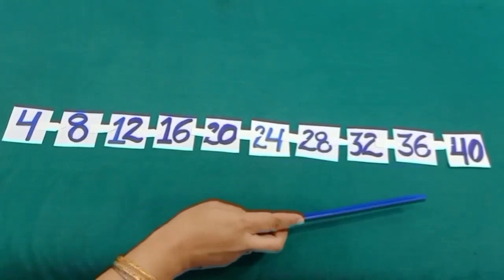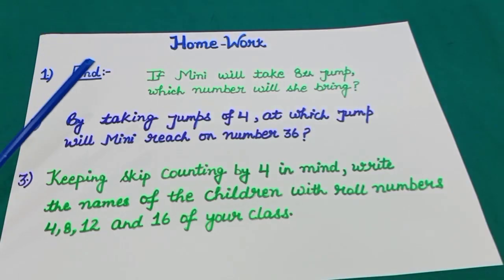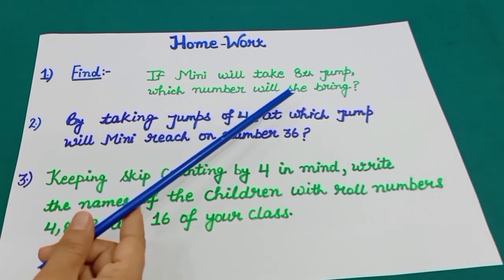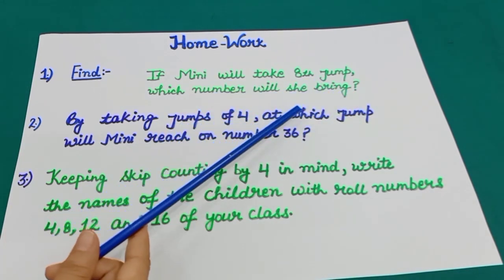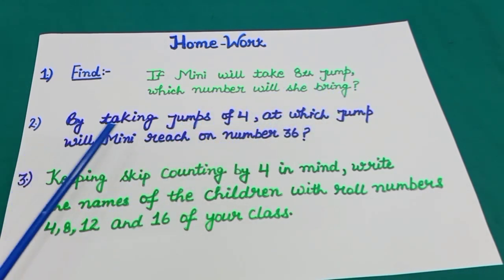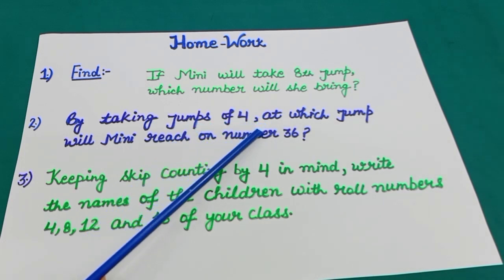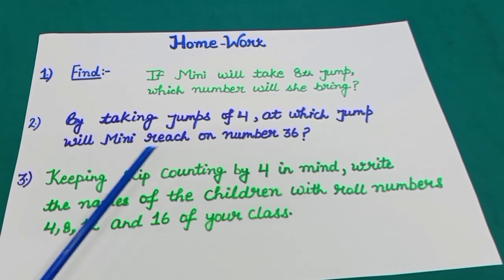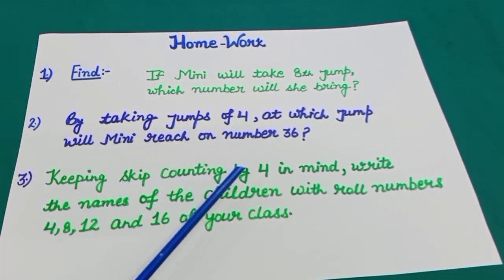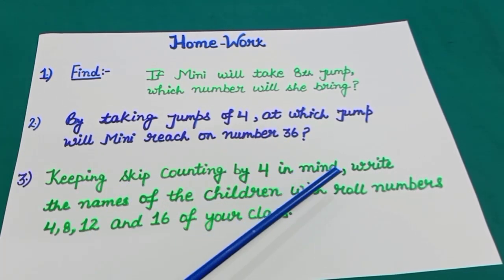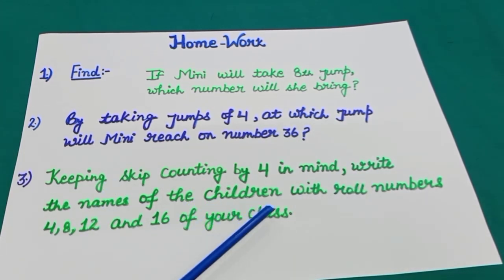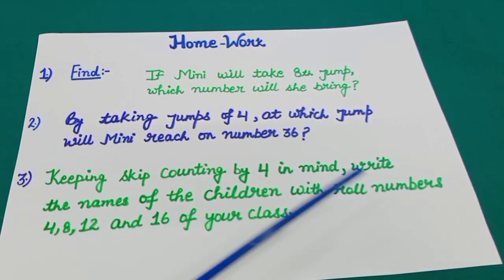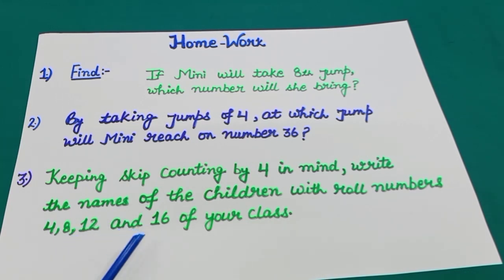In the homework, dear students: Number 1 — Find if Minnie will take her 8th jump, which number will she reach? Number 2 — By taking jumps of 4, at which jump will Minnie reach number 36? Number 3 — Keeping skip counting by 4 in mind, write the names of the children with row numbers 4, 8, 12, and 16 of your class.